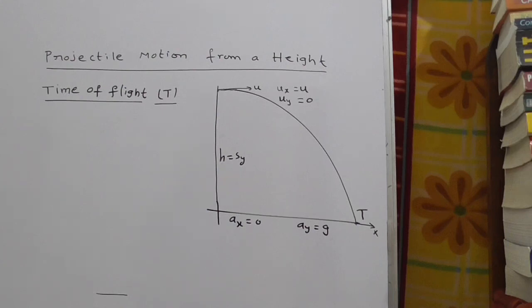Projectile motion from a height. Here we are going to calculate time of flight, it is denoted by capital T.